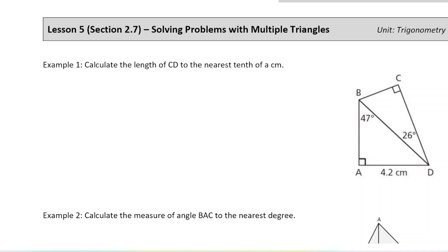This is the last lesson in our trigonometry unit. Today we're going to be looking at problems where we have multiple triangles. These are going to be multi-step problems where we're still using the sine, cosine, tangent ratio to determine some unknown length or angle.